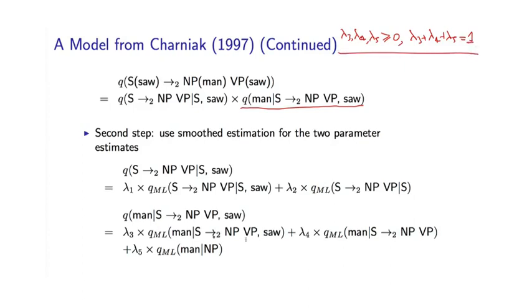Now let's look at these different maximum likelihood estimates. The first one is if we think about this schematically, if I have S saw with NP VP saw, this maximum likelihood estimate is going to be the ratio of two counts. The first count is the number of times I've seen this entire configuration. On the numerator, I'm going to count the number of times I've seen man in this particular position. So this estimate is basically conditioning on the entire structure, the entire rule and the head word saw.